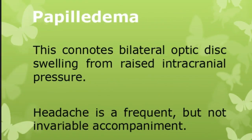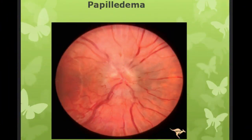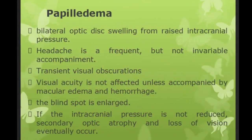Papilledema connotes bilateral optic disc swelling from raised intracranial pressure. Headache is a frequent but not invariable accompaniment. The fundoscopic picture shows large dilated congested veins and a blurred disc margin. There will be transient visual obscurations; visual acuity is not affected unless accompanied by macular edema and hemorrhage. The blind spot is enlarged. If intracranial pressure is not reduced, secondary optic atrophy and loss of vision eventually occur.